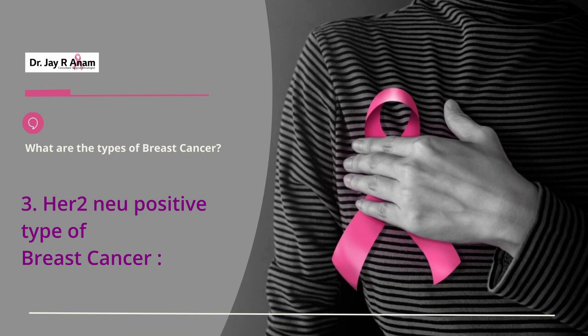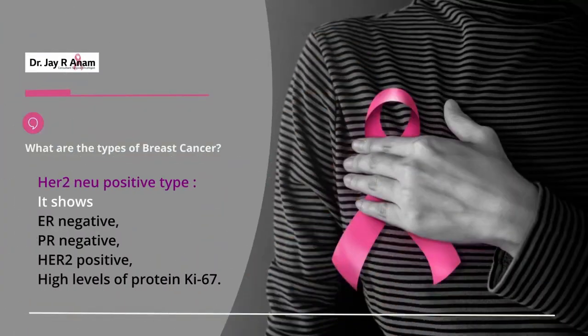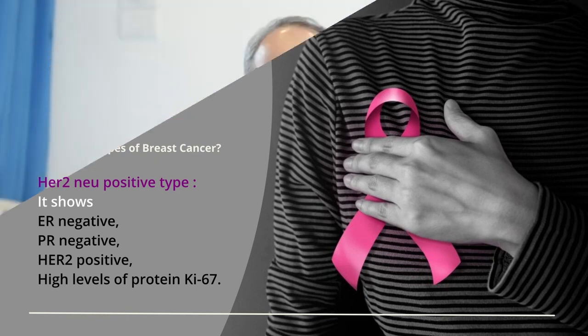The third type is the HER2-neu enriched or HER2-neu positive type of tumor. In these tumors, the ER and PR receptors are absent, the HER2-neu receptors are present, and the KI67 is usually on the higher side. The significance of this receptor is that we now have targeted drugs like Herceptin — the drug name is Trastuzumab — which targets specifically these receptors and thus only the cancer cells.